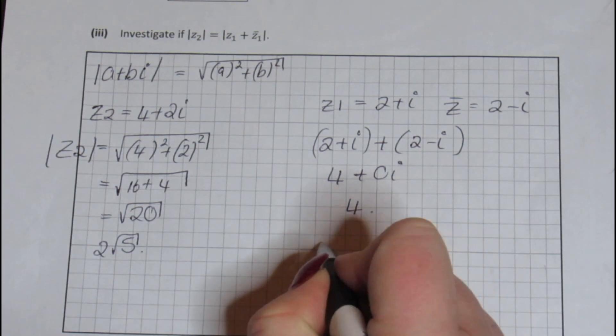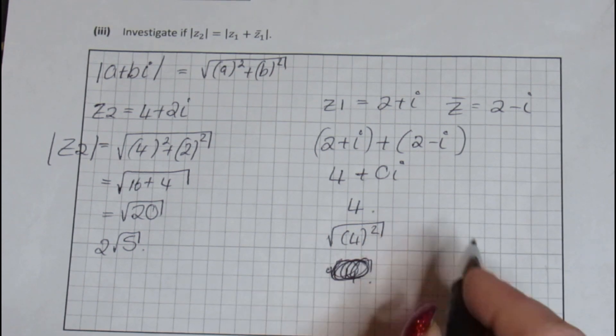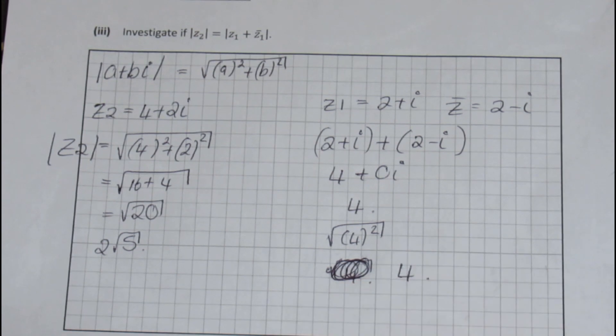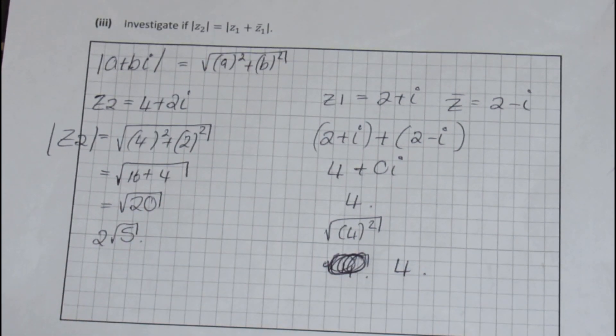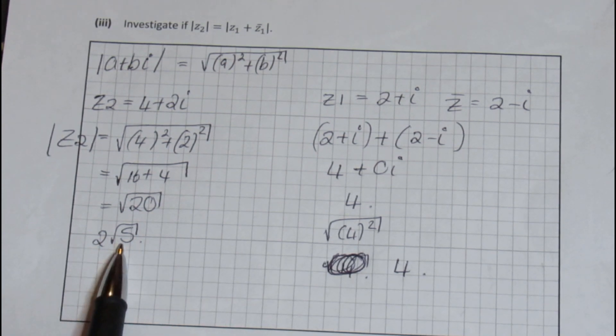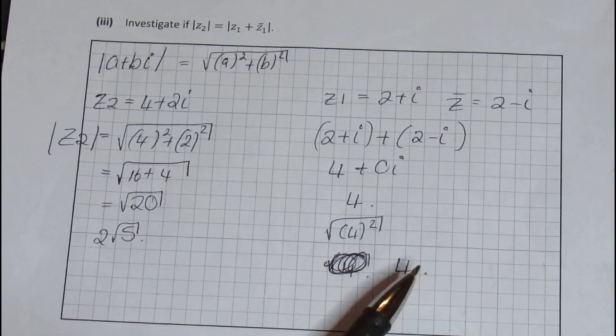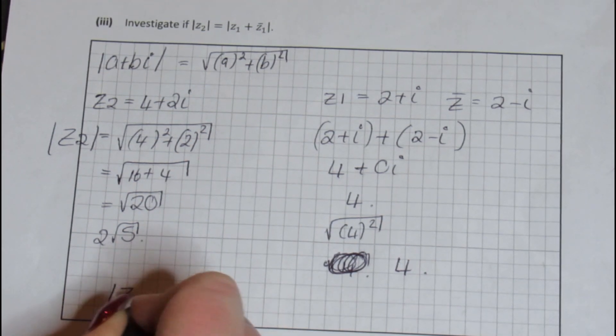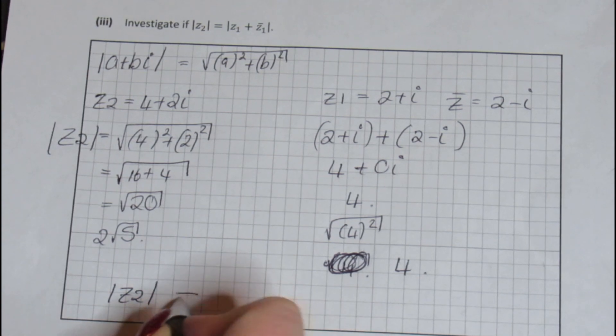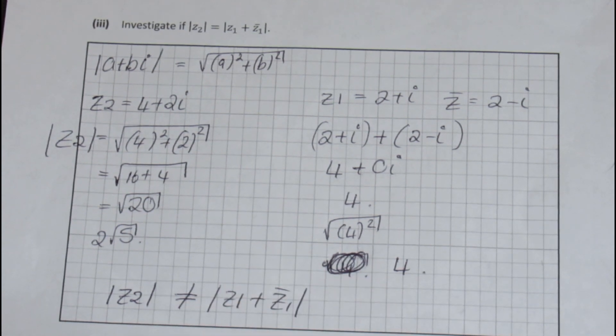Let's get the modulus of 4. So we get the square root of that. We know that 4 squared with a square root will cancel each other out. So we end up with an answer of 4. If you didn't know that, your calculator will tell you that information anyway. Are they the same? Absolutely not. They're very different numbers. If you put 2 root 5 into your calculator it gives you 4.472 and lots of other decimal places, and this gives you 4. They're close but they're not the same. If you want to tidy up your findings, go back and say that the modulus of Z2 is not equal to the modulus of Z1 plus Z1 bar. And that is it. Done.